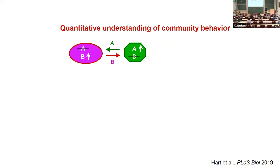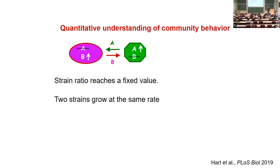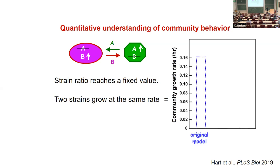We're also very interested in quantitatively understanding community behavior. Going back to the cooperative community, it turns out that because of these interactions, the strain ratio always reaches a fixed value, which means the two strains must grow at the same rate — we call this the community growth rate. We can measure the release and consumption phenotypes in monocultures, and then try to predict how fast the community would grow. The original model gives a prediction, but when we do experiments they're different. Even though the difference might seem small, remember growth is exponential — so even a small difference in predicted versus real growth rate would lead to exponential divergence between observed and predicted dynamics.